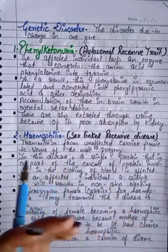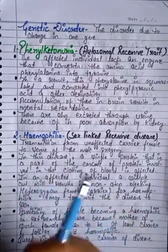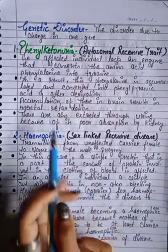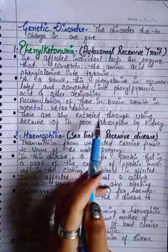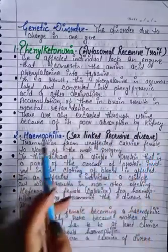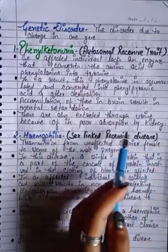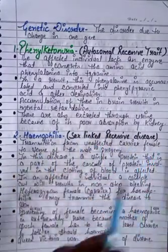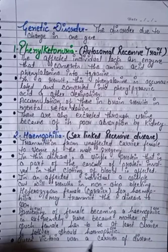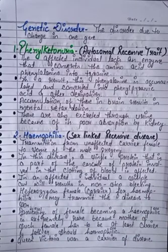If these derivatives accumulate in the brain, it causes mental retardation. They are also excreted through urine because of poor absorption by the kidney — the kidney doesn't absorb them properly.